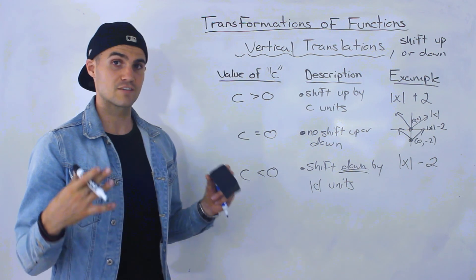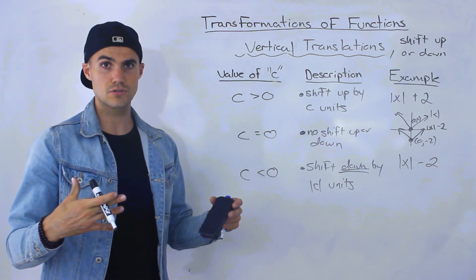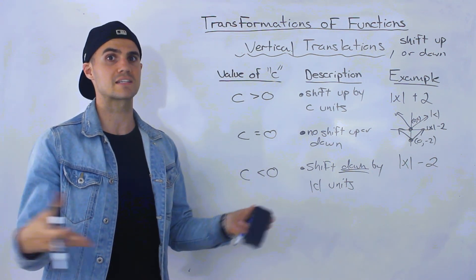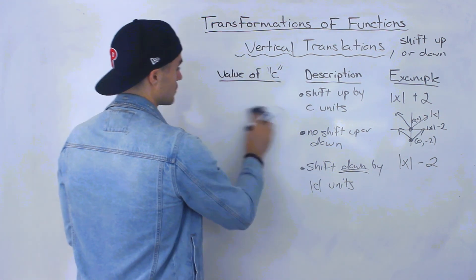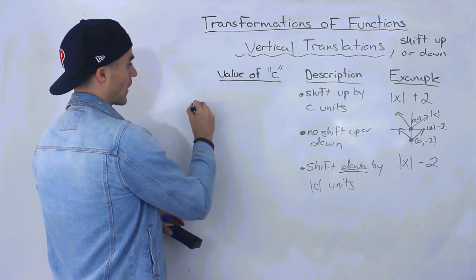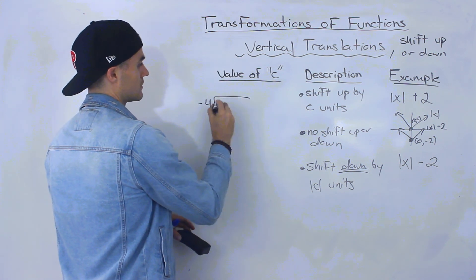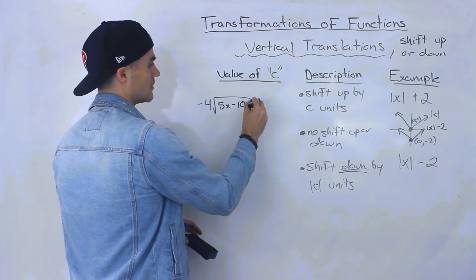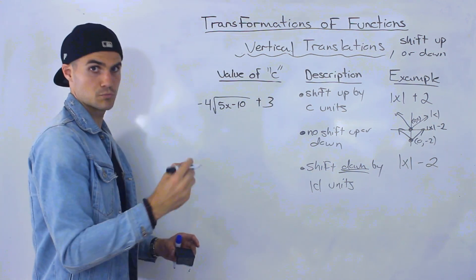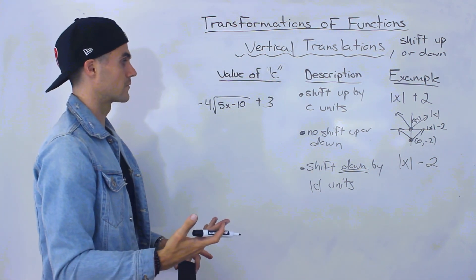And what we're going to cover in the next video is if we take all of these values, all these transformations, and mix them together. So how do we go about, for example, graphing something like this in a smooth, quick way?